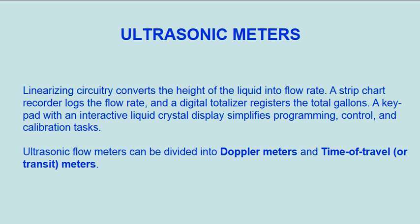Linearizing circuitry converts the height of the liquid into flow rate. A strip chart recorder logs the flow rate, and a digital totalizer registers the total gallons. A keypad with an interactive liquid crystal display simplifies programming, control, and calibration tasks.